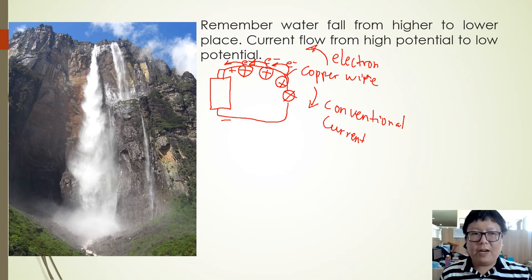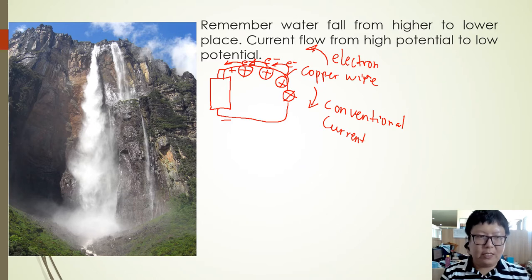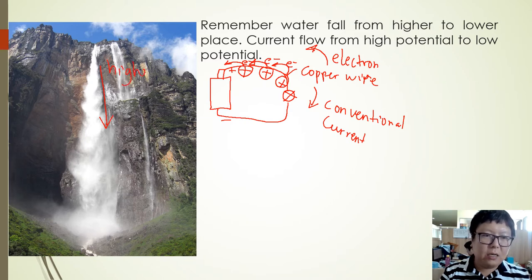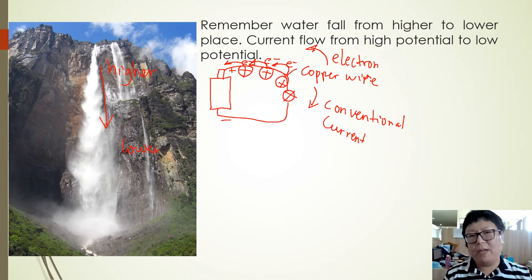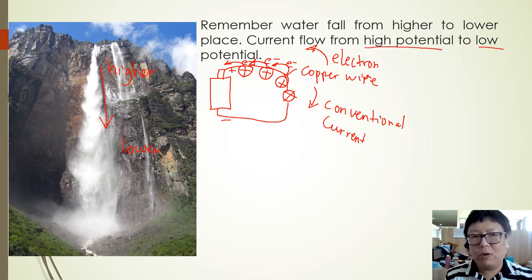We can imagine the movement of current like a waterfall — you can see that a waterfall moves from a higher place to a lower place. Similarly, electricity moves from high potential to low potential.